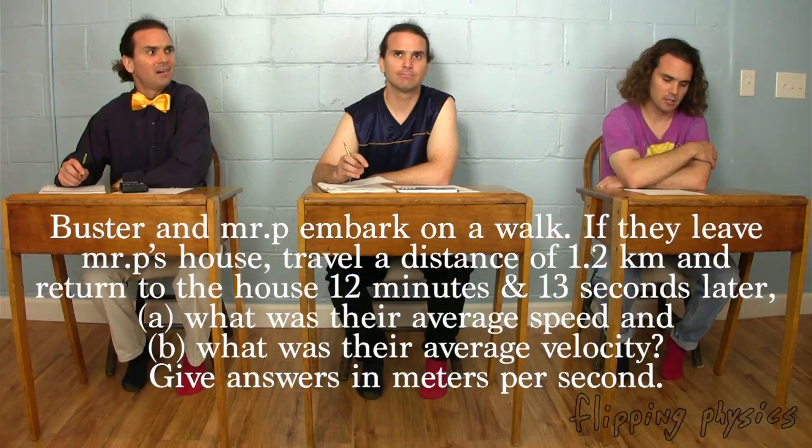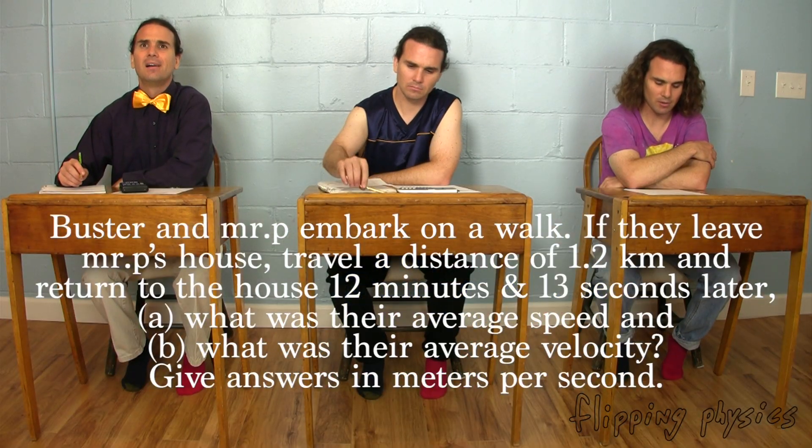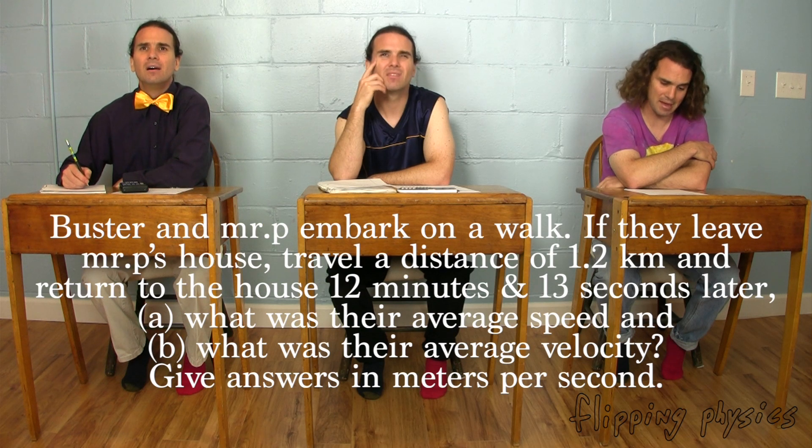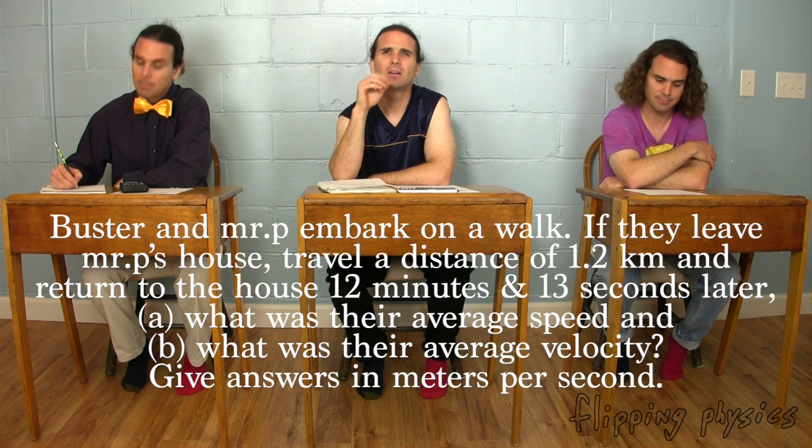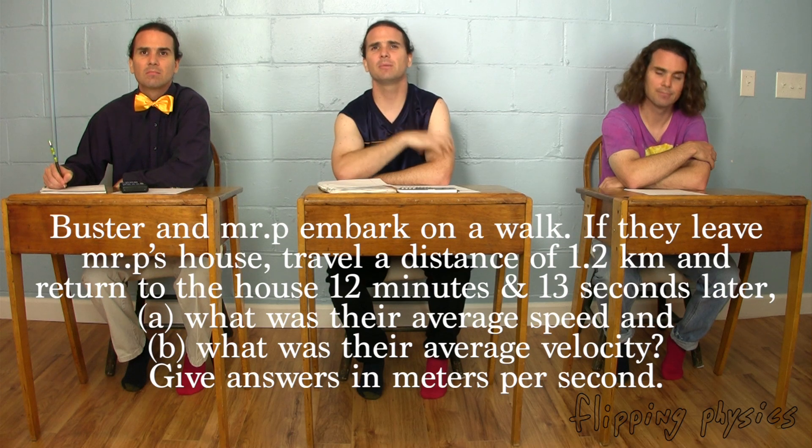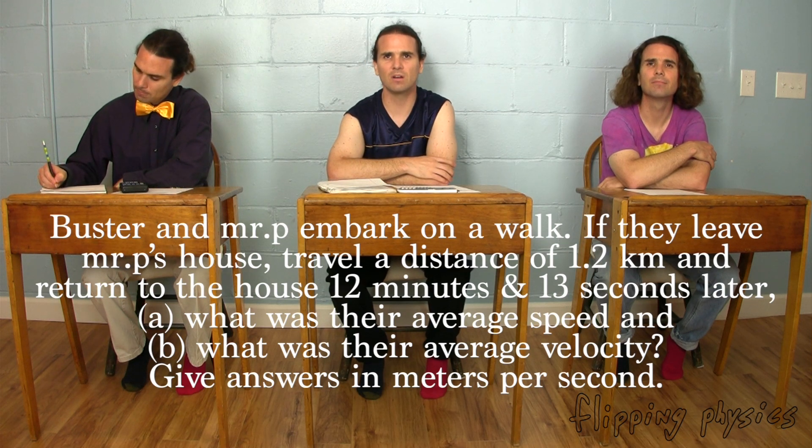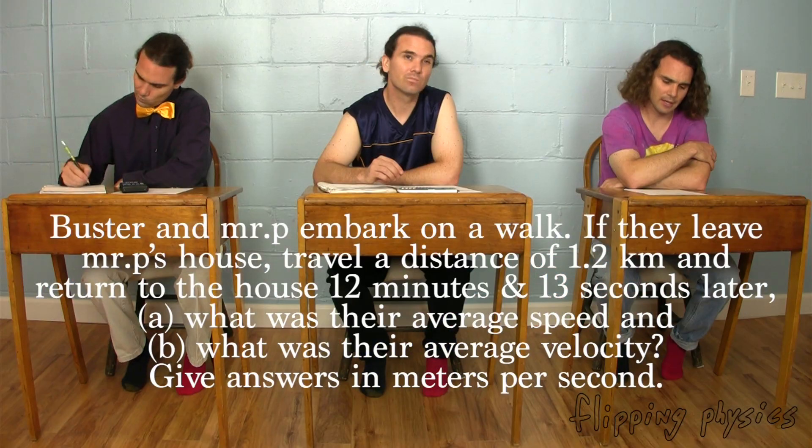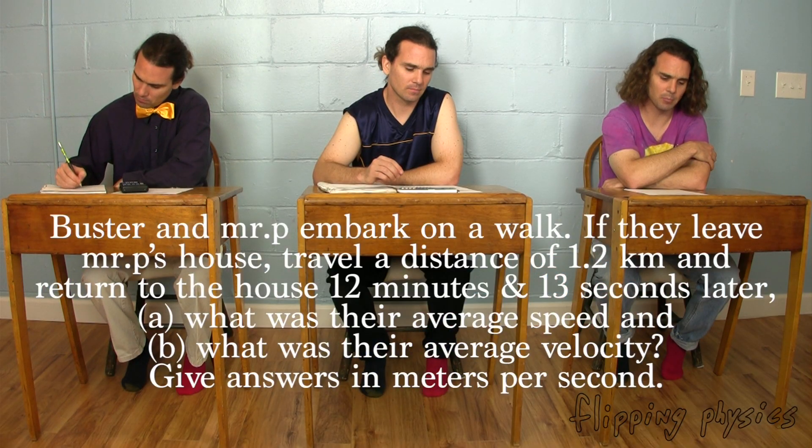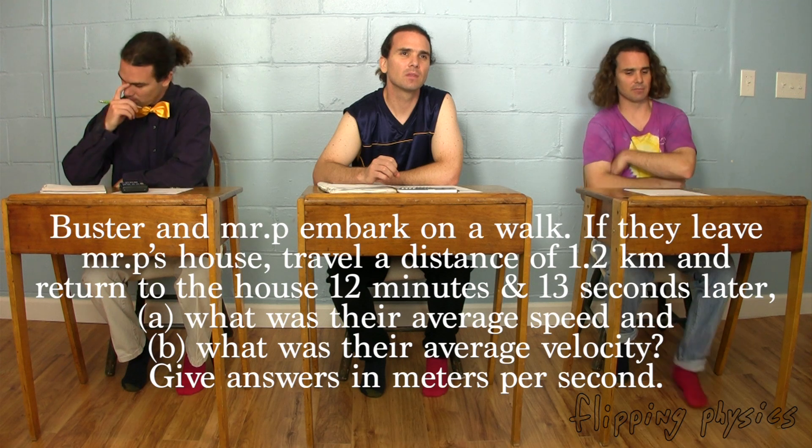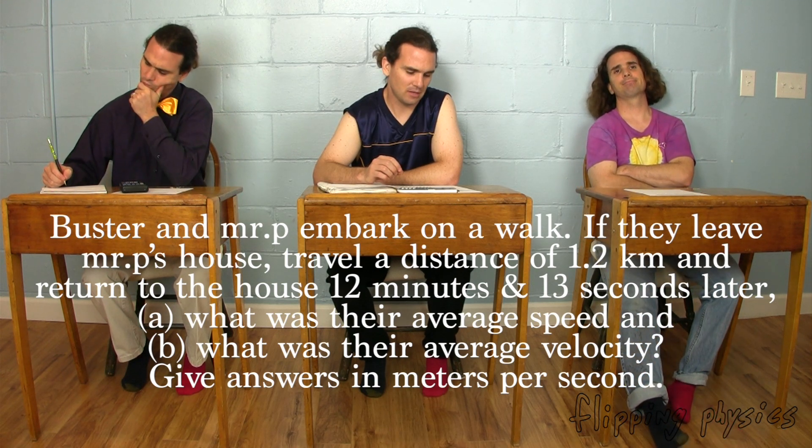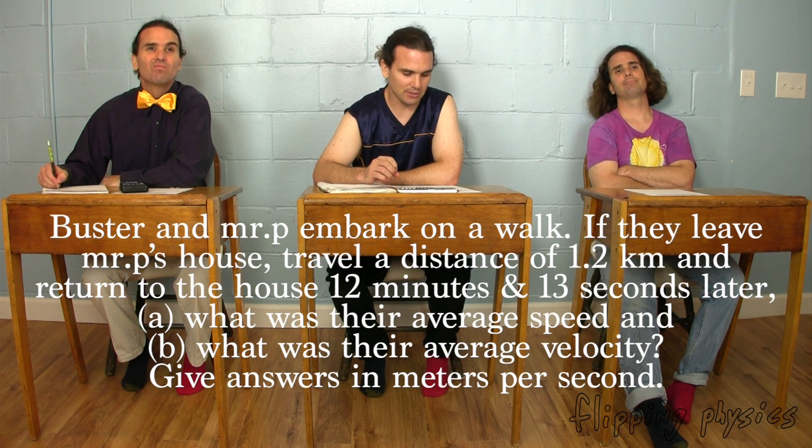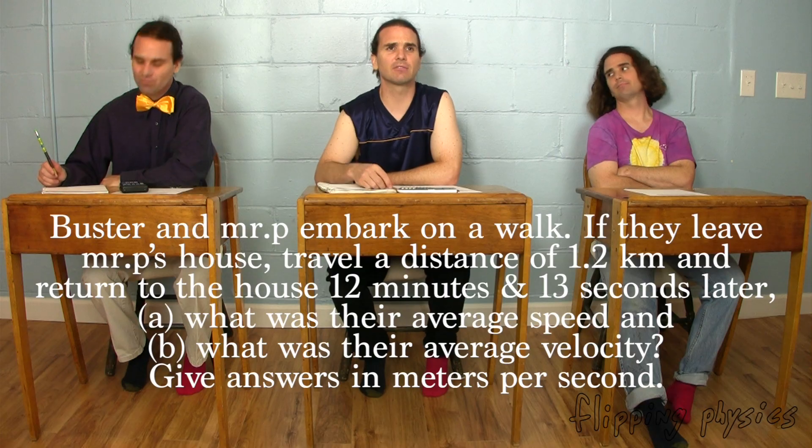Bo, could you please read and Bobby, could you please translate? Buster and Mr. P embark on a walk. If they leave Mr. P's house and travel a distance of 1.2 kilometers and return back to his house 12 minutes and 13 seconds later. Please stop. distance equals 1.2 kilometers and time equals 12 minutes and 13 seconds. Yep. Bo, please continue. A, what was their average speed? And B, what was their average velocity? Give answers in meters per second. Part A, average speed equals question mark. And part B, average velocity equals question mark. Oh, and add the meters per second for each one.